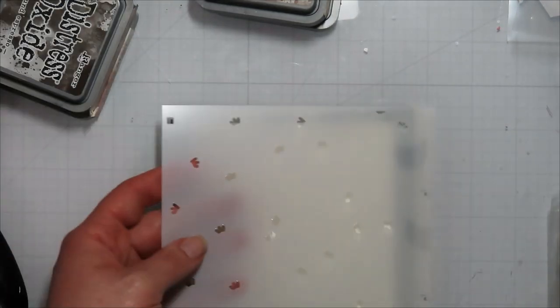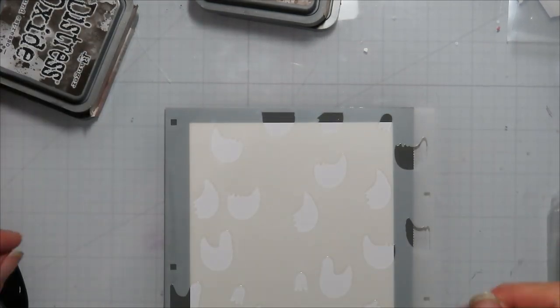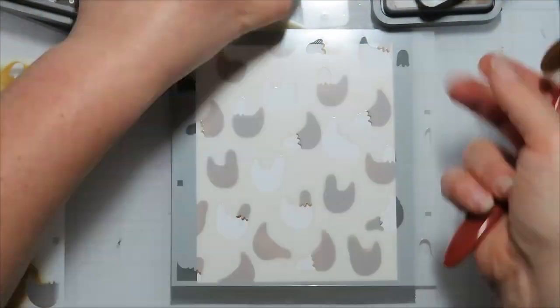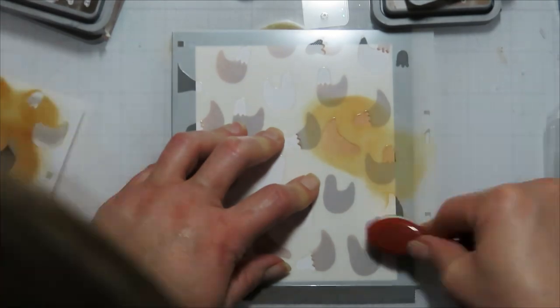I'm starting with that first layer. I don't know if that's the first one, the second one, the third one. I just pick one of the three and go from there. For my first layer there, I went in with some vintage photo and then I'm coming in with some tea dye.